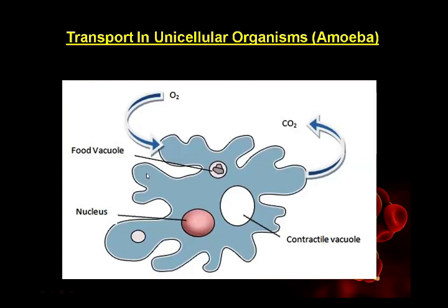The cell membrane is here, cytoplasm is filled inside the amoeba. Gases dissolve inside the cytoplasm and carbon dioxide diffuses out by diffusion. When oxygen enters the cytoplasm it reaches the mitochondria, which are responsible for releasing energy. This is the process of gaseous exchange in the amoeba.